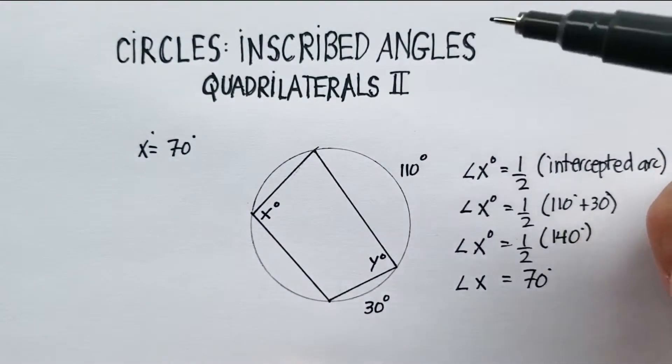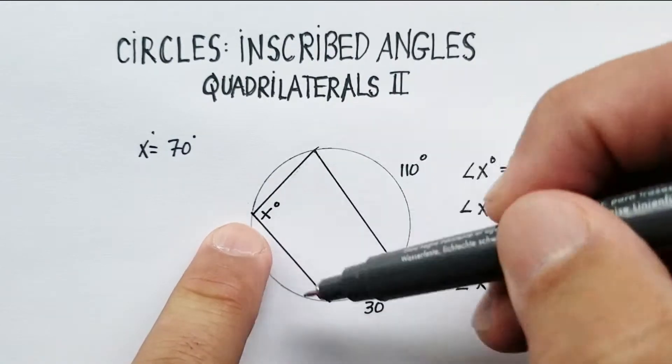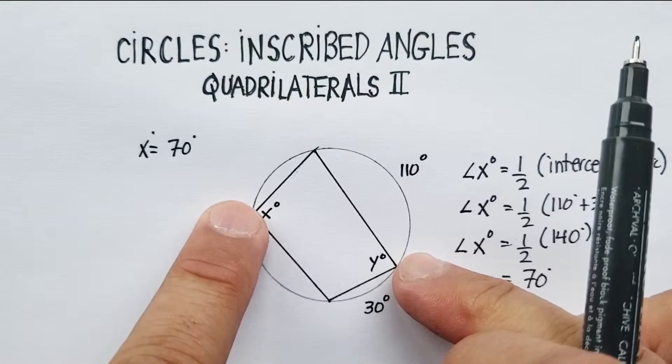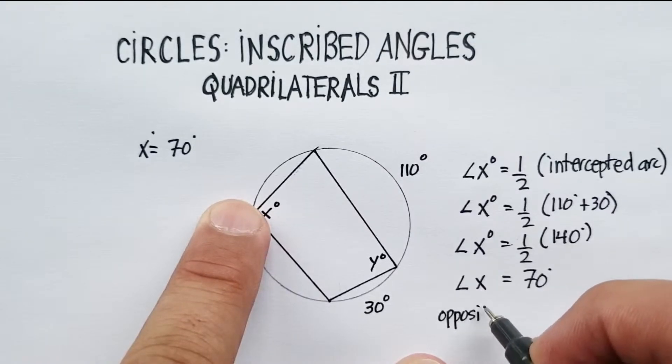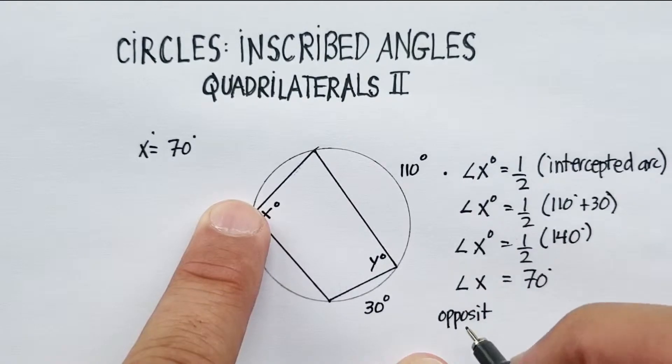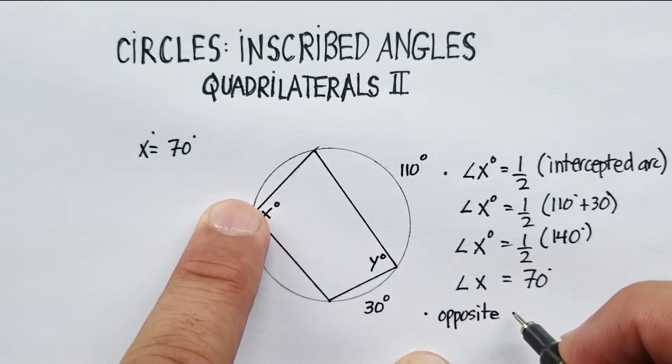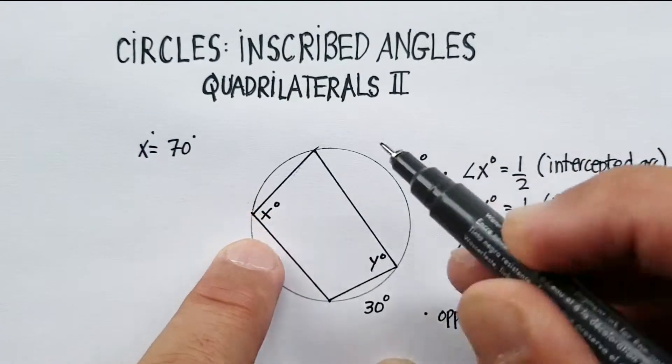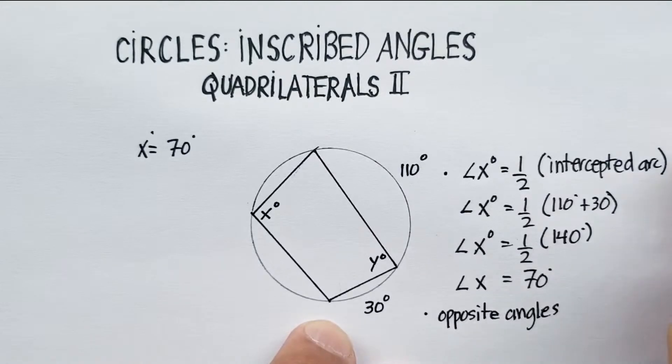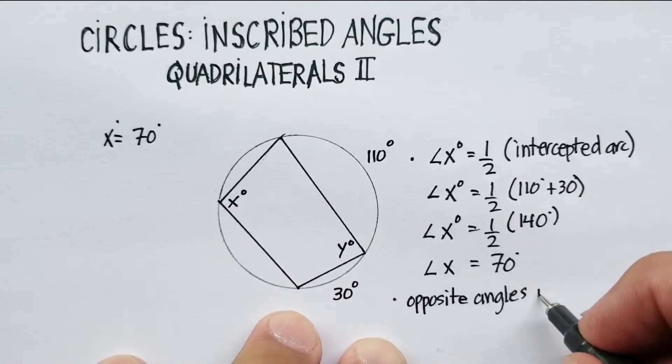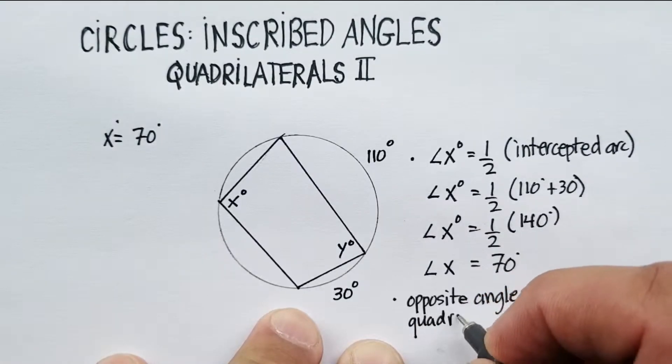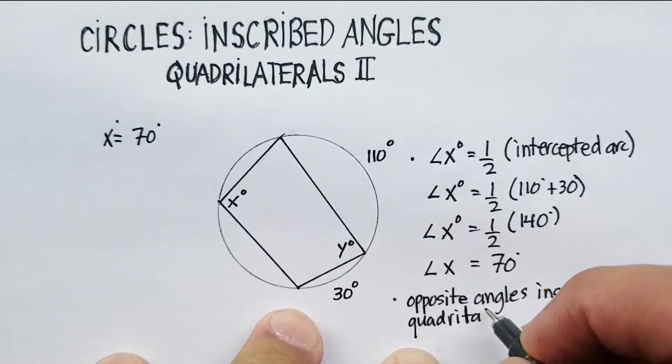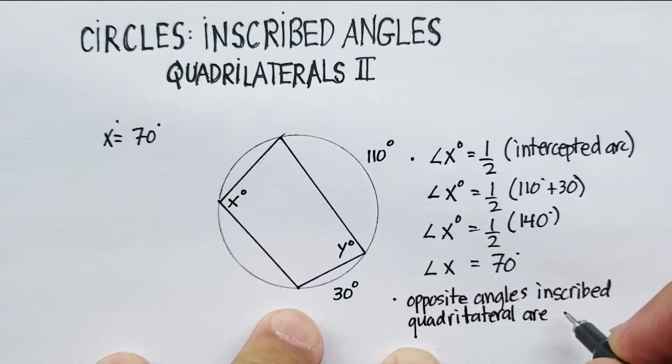Now, there's another rule that we know, that in a quadrilateral inscribed inside a circle, the opposite angles are supplementary. Let me just call this the first rule that we looked at. This is going to be the second rule we looked at. Opposite angles inside an inscribed quadrilateral are supplementary.